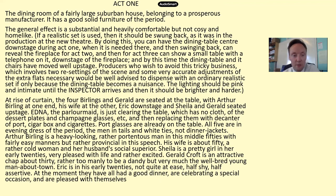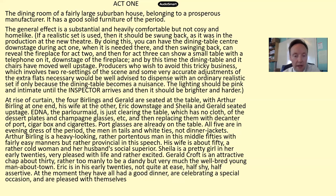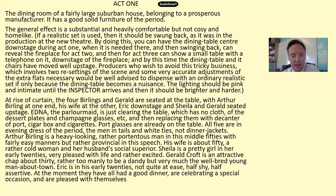The lighting should be pink and intimate until the Inspector arrives, and then it should be brighter and harder. At the rise of the curtain, the Birlings and Gerald are seated at the table — Arthur Birling at one end, his wife at the other, Eric downstage, and Sheila and Gerald seated upstage. Edna the parlour maid is clearing the table of dessert plates and champagne glasses, replacing them with a decanter of port and cigars. All five are in evening dress of the period — the men in tails and white ties, not dinner jackets.